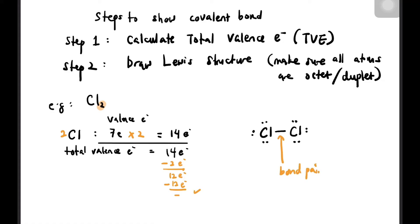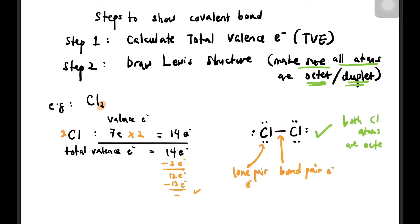The bond pair is the covalent bond, and each double dot is called a lone pair of electrons. Let's check whether both Cl atoms are octet: the first Cl has 1, 2, 3, 4, 5, 6, 7, 8 electrons — octet. The other Cl: 1, 2, 3, 4, 5, 6, 7, 8 — octet. Both Cl atoms are octet. This bond pair is the single covalent bond of Cl₂.